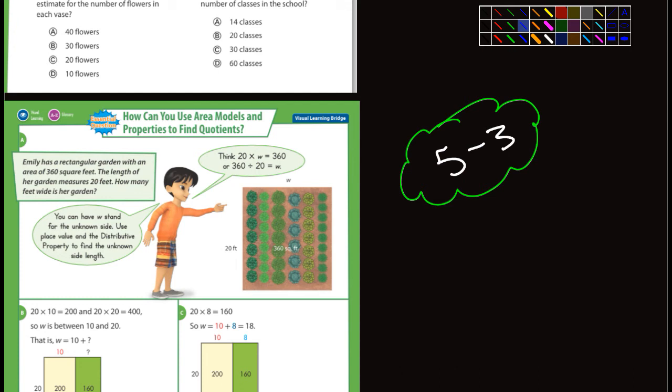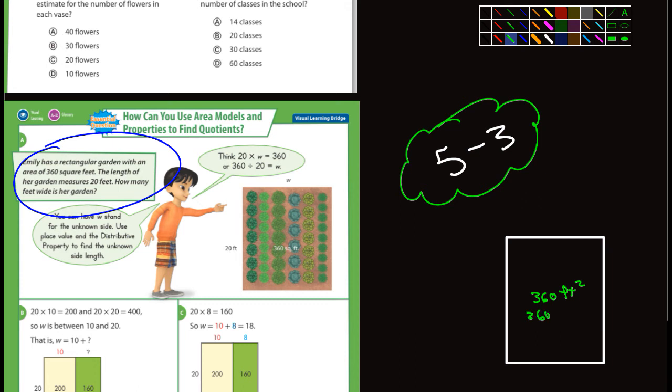So I'm going to go through this here pretty quick. We are in lesson 5-3, and in this particular example, they're saying Emily has a rectangular garden with an area of 360 square feet, and the length of her garden measures 20 feet. How many feet wide is her garden? So I'm going to draw Emily's garden here really quick. And it's nice in the sense that they did give us some information here that we can use. It's the 360 square feet. You could write feet squared or Ft squared or 360 feet Sq. It means the same thing, feet squared. When we're talking about an area, it's always square feet.